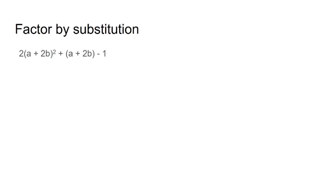Last example. So right here, you can see it follows the same structure. So we're just going to say let u equal a plus 2b. So whenever I rewrite this, we have 2u squared plus just a u and then minus 1.